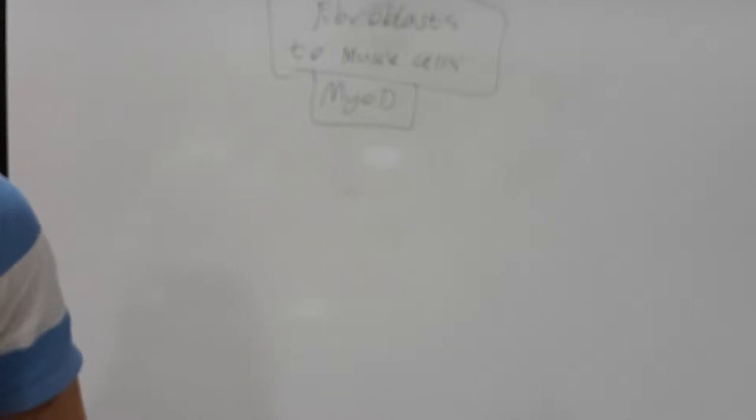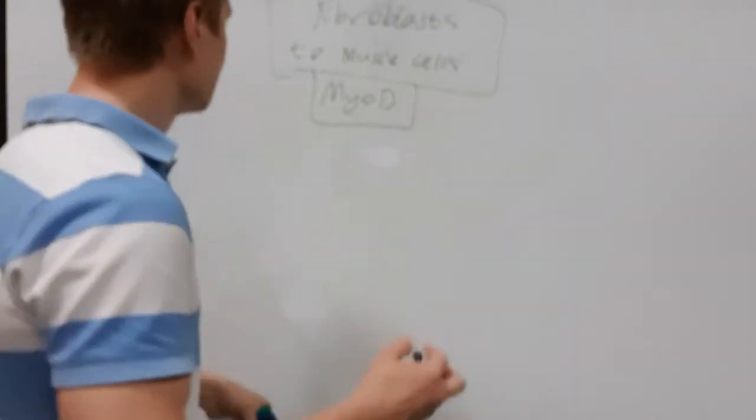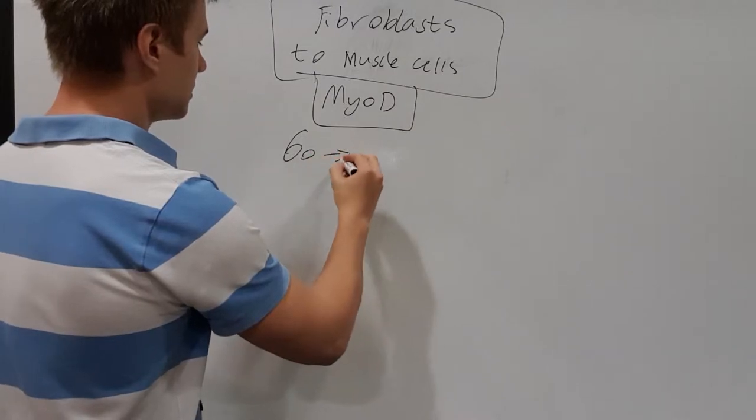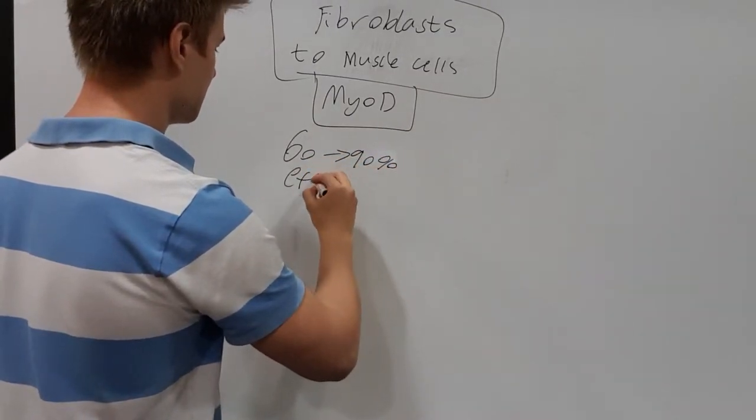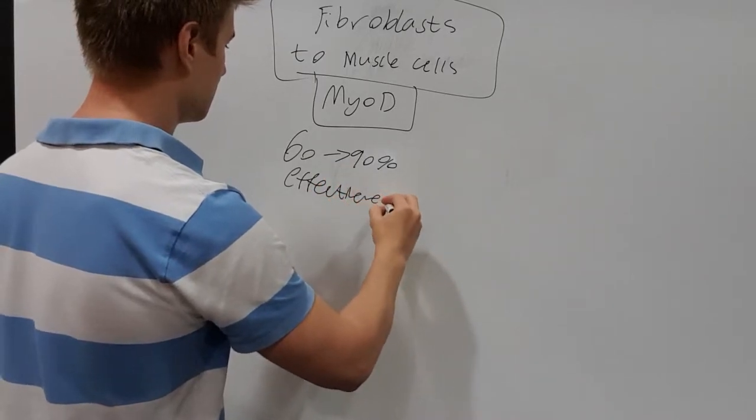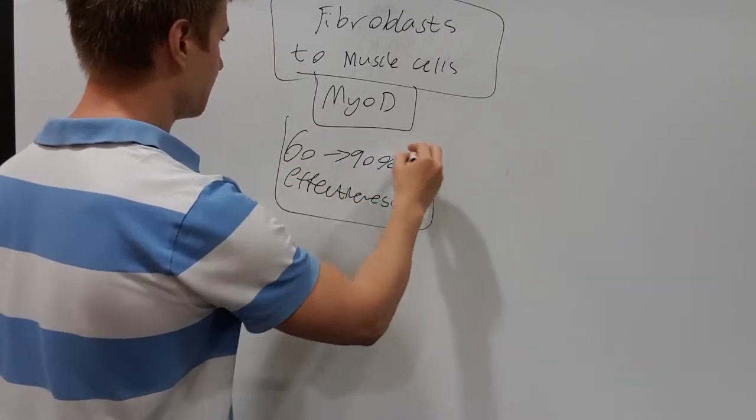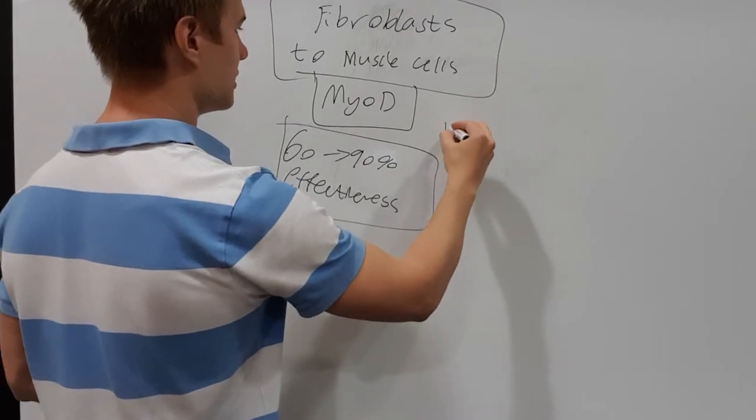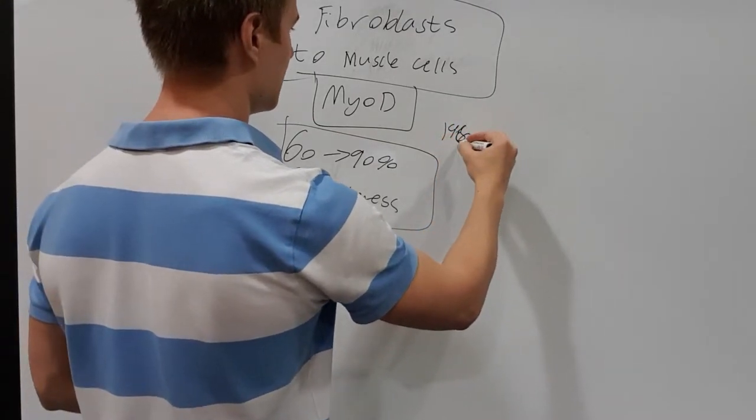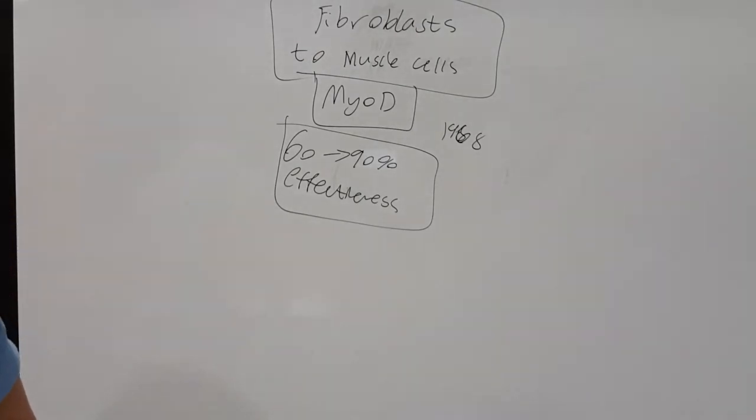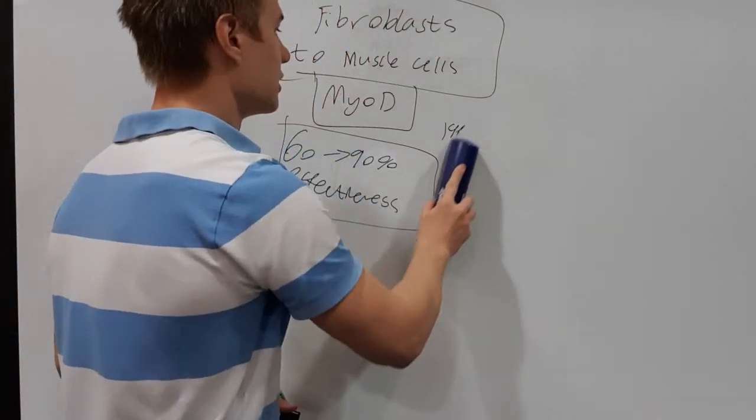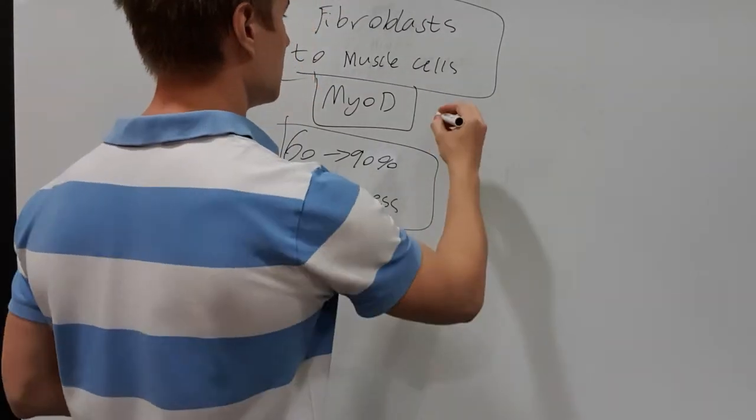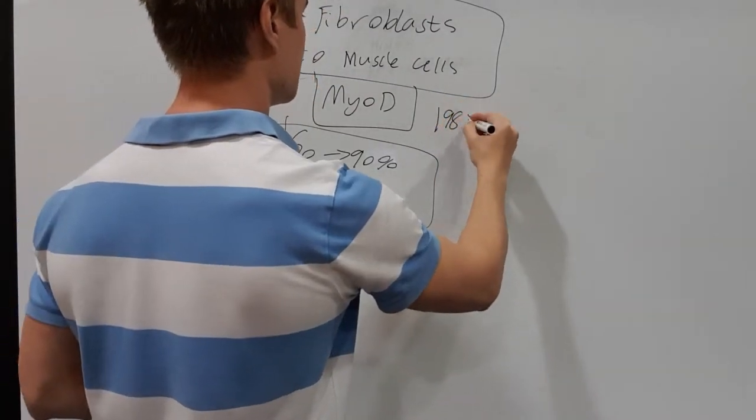And that single transcription factor is regulating something like 7,000 genes. And so it's quite amazing that this one factor is able to take this type of cell to that type of cell. So that's really cool. And it can do that with 60 to 90 percent effectiveness. And this was done in 1987.